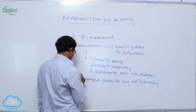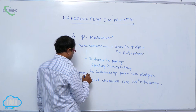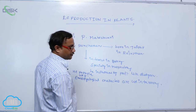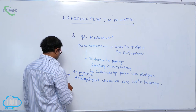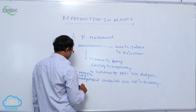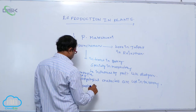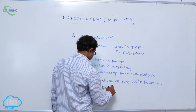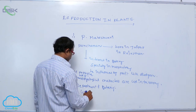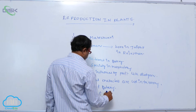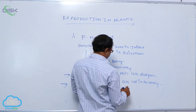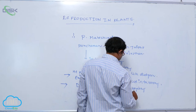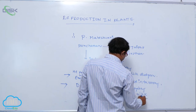He popularized the use of embryological characters in taxonomy for the first time. He also introduced the establishment of the Department of Botany at the University of Delhi. Embryology and tissue culture were well developed by Panchanan Maheshwari.